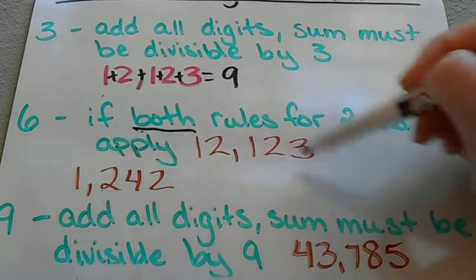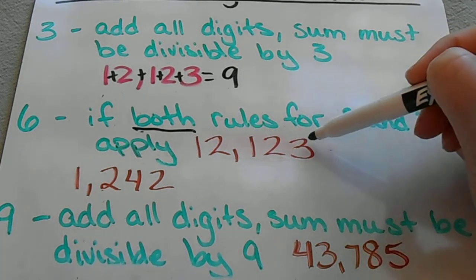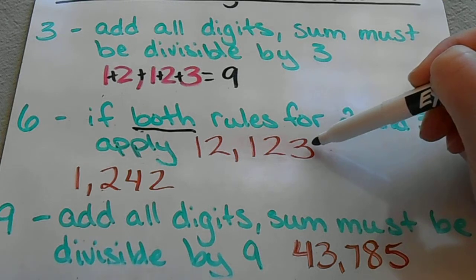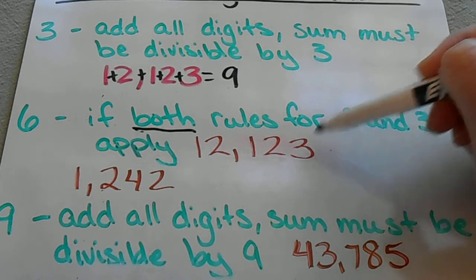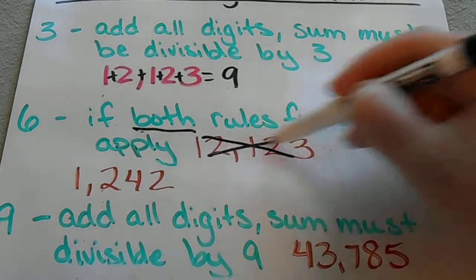For example, this one does not work because we have an odd number. So it is divisible by 3, but it is not divisible by 2, so that one does not work.